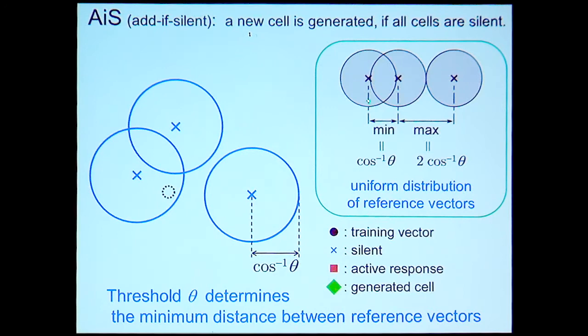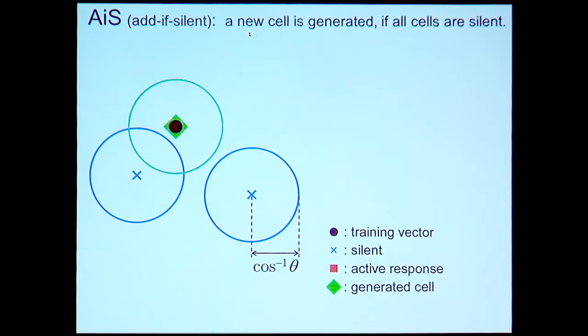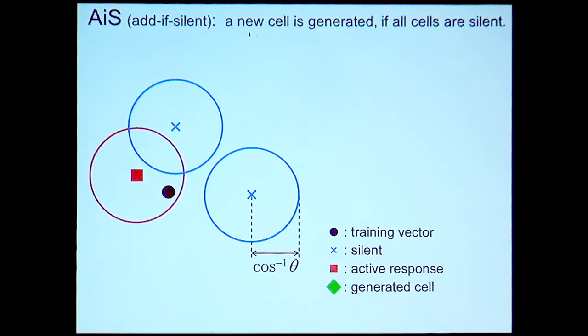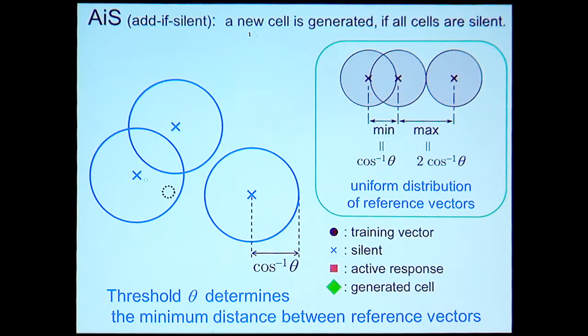We can say that the minimum distance between cells becomes cosine theta, where theta is the threshold. The maximum distance between cells becomes the diameter of the tolerance area if a sufficiently large number of training vectors have been presented.